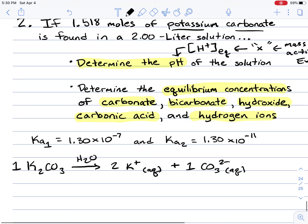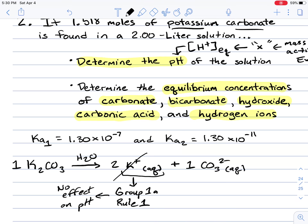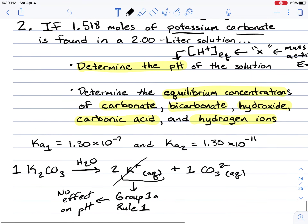According to rule one of determining whether ions of an ionic salt affect the pH of the solution: since potassium is a group 1A element, it will not have an effect. This potassium ion has no effect on pH, so we're going to completely ignore potassium for the entire problem.